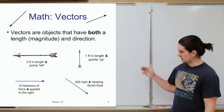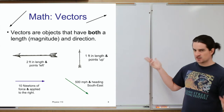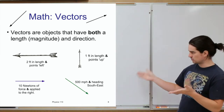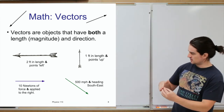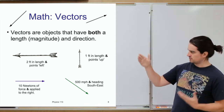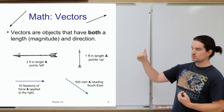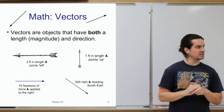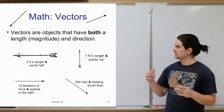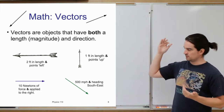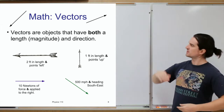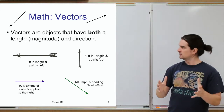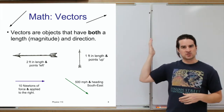Some examples of vectors: force is a vector quantity — for instance, 10 newtons of force applied to the right. A vector has a magnitude and points in a direction. Similarly, a plane's velocity can be represented as a vector: a speed of 500 miles per hour heading southeast. Both the magnitude and the direction are needed to fully define a vector.